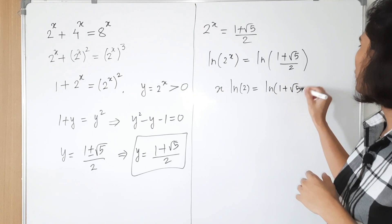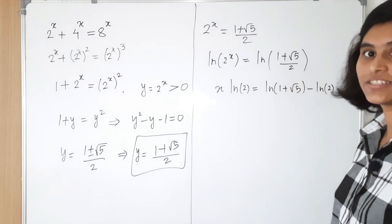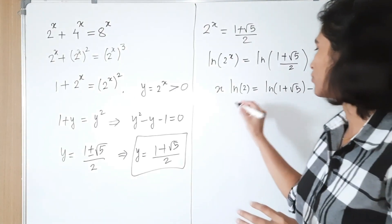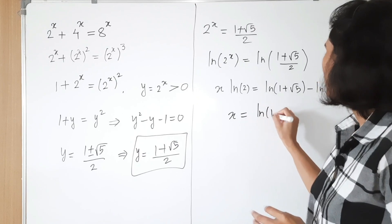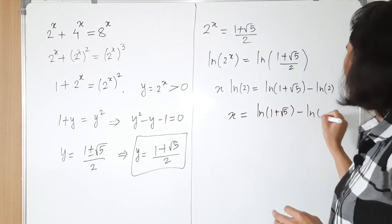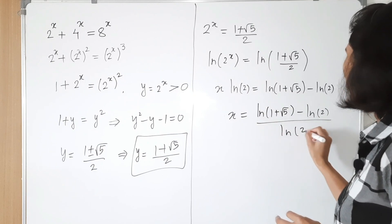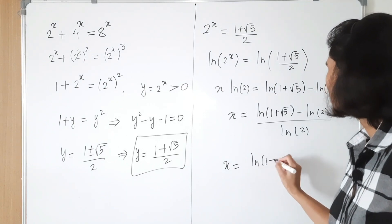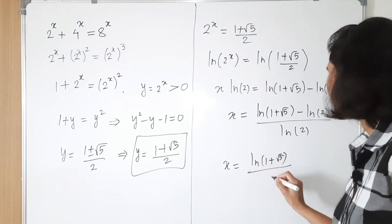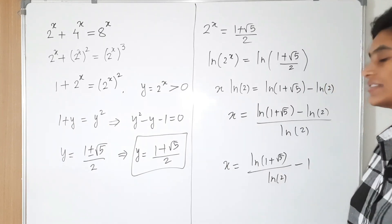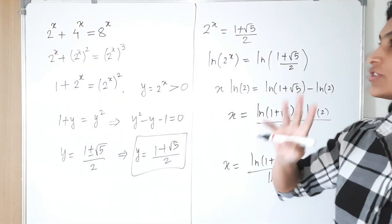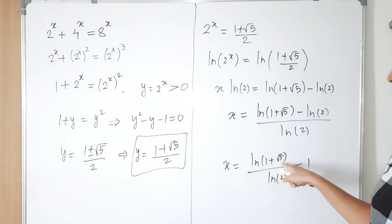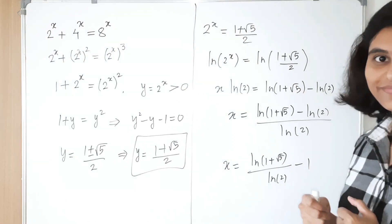Applying the rules of logarithm, this becomes ln of 1 plus square root 5 minus ln of 2, all equal to x times ln of 2. Since ln of 2 is positive we can divide by it, giving x equals ln of 1 plus square root 5 minus ln of 2, divided by ln of 2, which simplifies to ln of 1 plus square root 5 divided by ln of 2, minus 1. So the solution is unique: x equals ln(1 + √5) / ln(2) − 1. I hope you liked this video, thank you for watching.